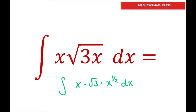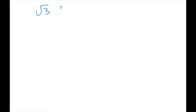And we can pull this square root of 3 out and combine our x's. So that's going to be x to the 2 over 2 times x to the 1 half, which is x to the 3 halves. So basically we have square root of 3 times the integral of x to the 3 halves dx.